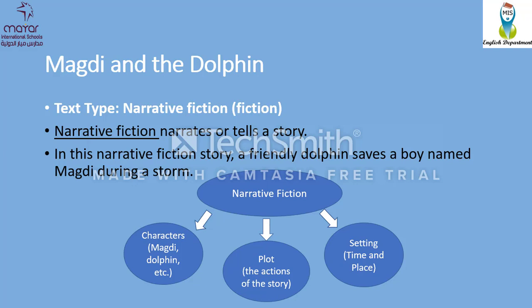In this narrative fiction story, a friendly dolphin saves a boy named Majdi during a storm. We're going to know all the details of the story later. Each story mainly consists of elements. The first element is characters — from the title Majdi and the Dolphin, we can predict that Majdi is a character and the dolphin is a character also. We must have a plot, which means the actions of the story. And the setting — when and where, the time and place of the story.